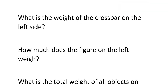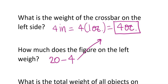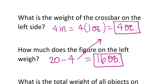The next question asks what is the weight of the crossbar on the left side. If the crossbar on the left side is 4 inches and each inch of crossbar weighs 1 ounce, we have 4 times 1 ounce, which would be 4 ounces. So the crossbar alone is 4 ounces. If you have 20 ounces altogether and subtract the 4 ounces, it's going to weigh 16 ounces — 4 ounces of crossbar and 16 ounces for the orange shape.